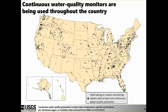These monitors are being used all throughout the country for a variety of purposes. This is a map of USGS spring and stream monitoring locations measuring at least one continuous parameter. Some stations simply collect water temperature in real time, while others collect a full suite of constituents — conductivity, pH, dissolved oxygen, and turbidity — across many different settings.